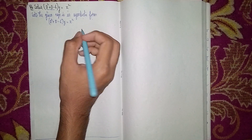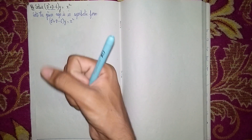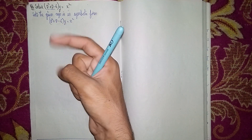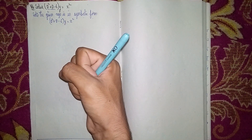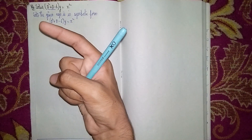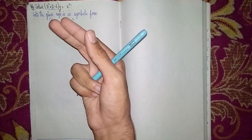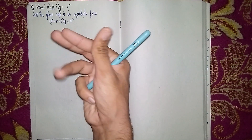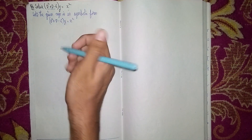There are three steps to solve this. First step is to find the complementary function. Second step is to find the particular integral. Third step is to find the general solution.